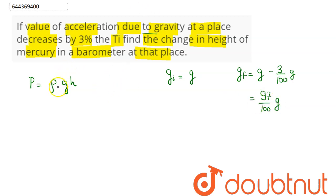We can see here this pressure remaining same, density remaining same. So, the height of mercury in barometer at that place is inversely proportional to acceleration due to gravity.